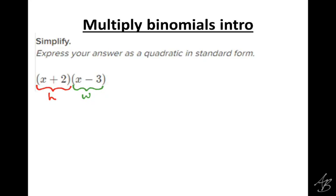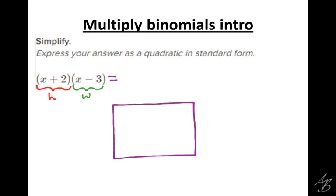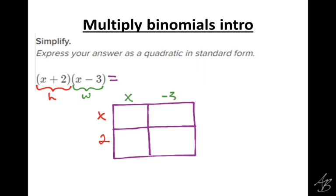Since we're doing this in Khan Academy, we're not going to be checking your work, but on your notes make sure that you're writing out the work, because if you look at it later and you're not really sure what you were doing, you're going to have trouble. I'm going to make a big rectangle, but then I'm going to split it up 2 by 2, since we have 2 terms times 2 terms. The height is x plus 2, so I'm going to put that over on the side — x for the top portion and 2 for the bottom. The width is x minus 3, so x on the left and negative 3 on the right.